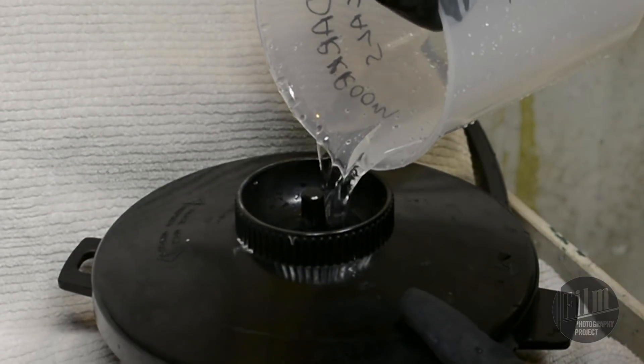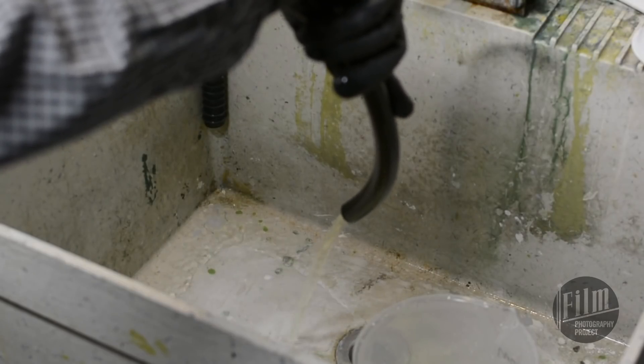Before we start putting chemicals in the tank, note that it drains using gravity, so make sure the hose stays up above the tank or the chemicals will spill out and you'll have a big mess.